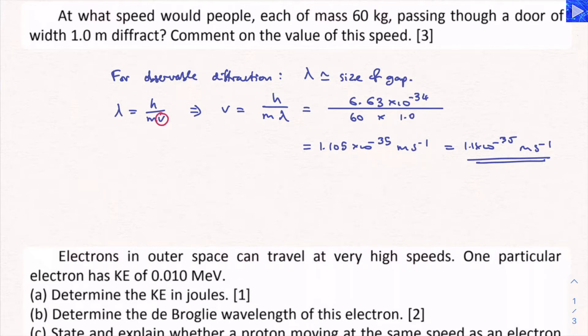The third point we'd want to make, comment on the value of this speed. Well, the velocity is so small it's negligible. That's the key idea here. They're basically stationary. Anything moving at 1.1 times 10 to the minus 35 meters per second is not going anywhere.